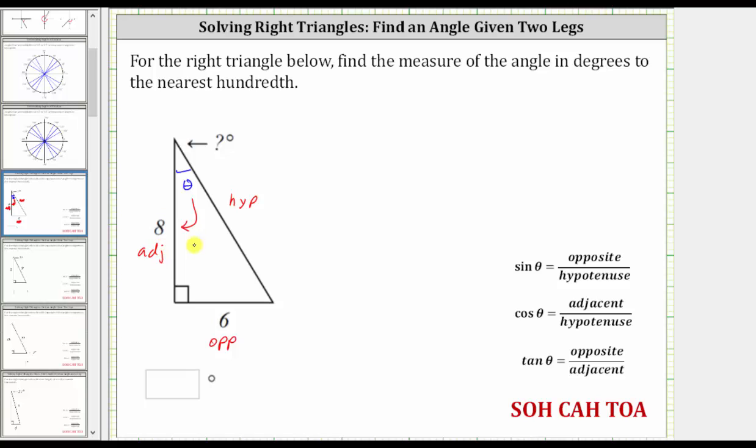Now because our goal is to find the measure of angle theta, and we're given the length of the opposite side and the adjacent side, we will use the tangent function to determine the measure of angle theta. This is because tangent theta is equal to the ratio of the length of the opposite side to the length of the adjacent side.